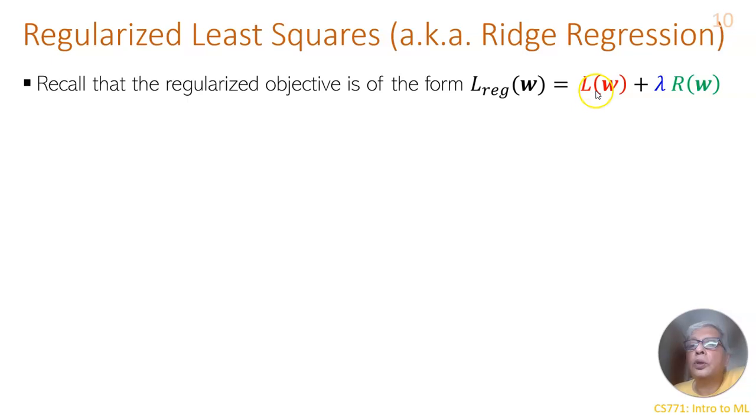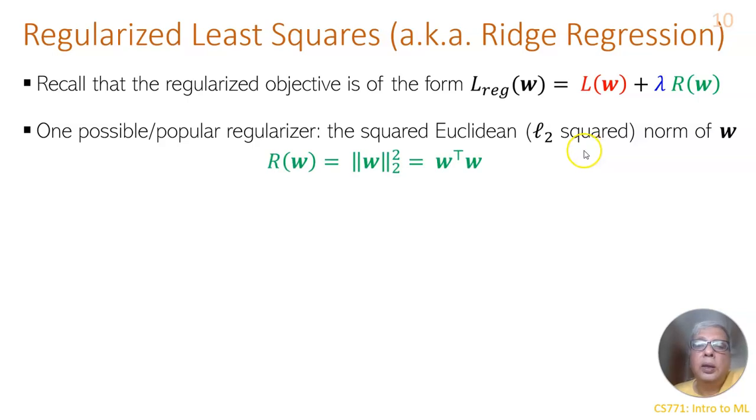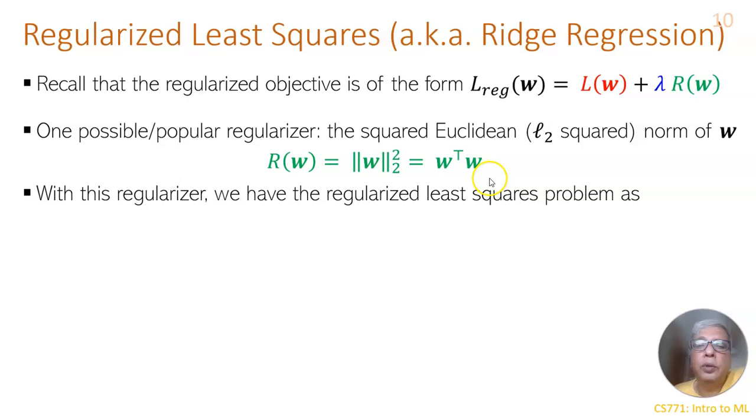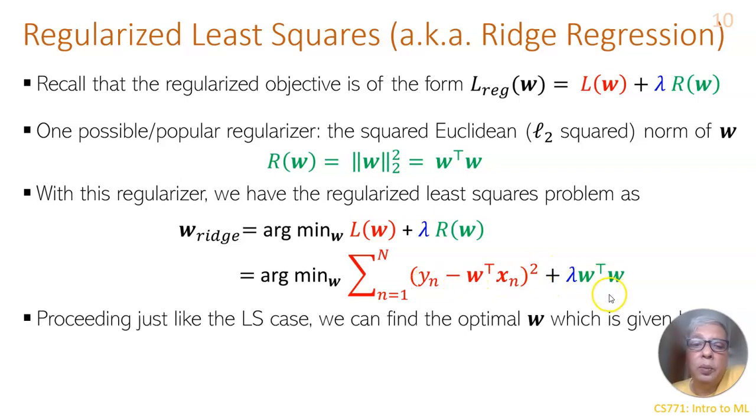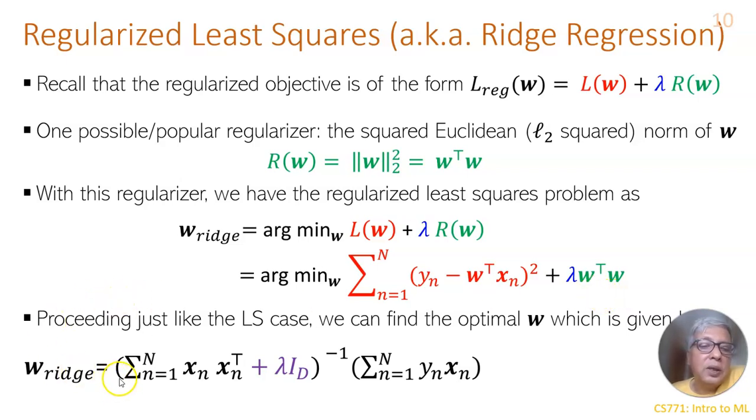So the loss becomes the actual loss from the data plus lambda times R(w), and this R(w) could be the squared norm w transpose w. Then we need to minimize summation yn minus w transpose xn whole square plus lambda w transpose w. And the best estimate comes as summation xn transpose xn plus lambda times identity inverse, summation yn xn. This is similar to x transpose x plus lambda i inverse x transpose y. This goes to ridge regression.